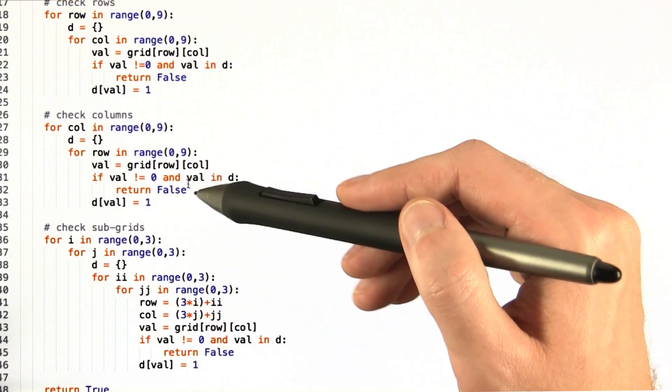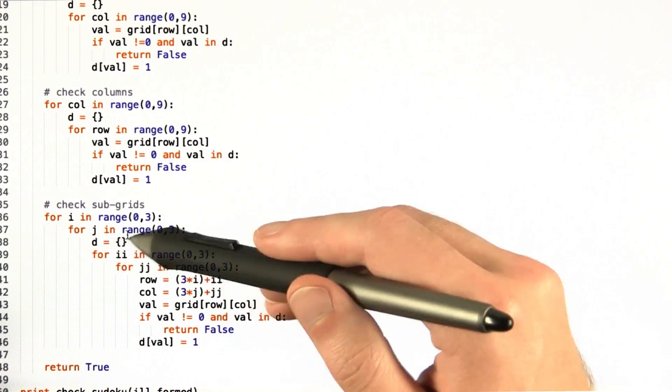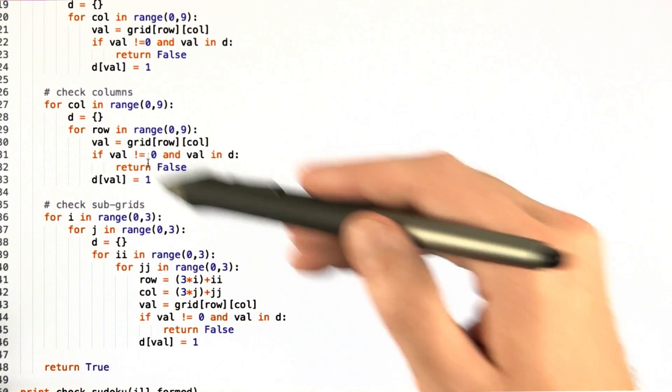And we do the same thing for the columns. Okay, for checking the subgrids, we basically just do additional for loops. We do the same dictionary checking as we did for the rows and the columns.